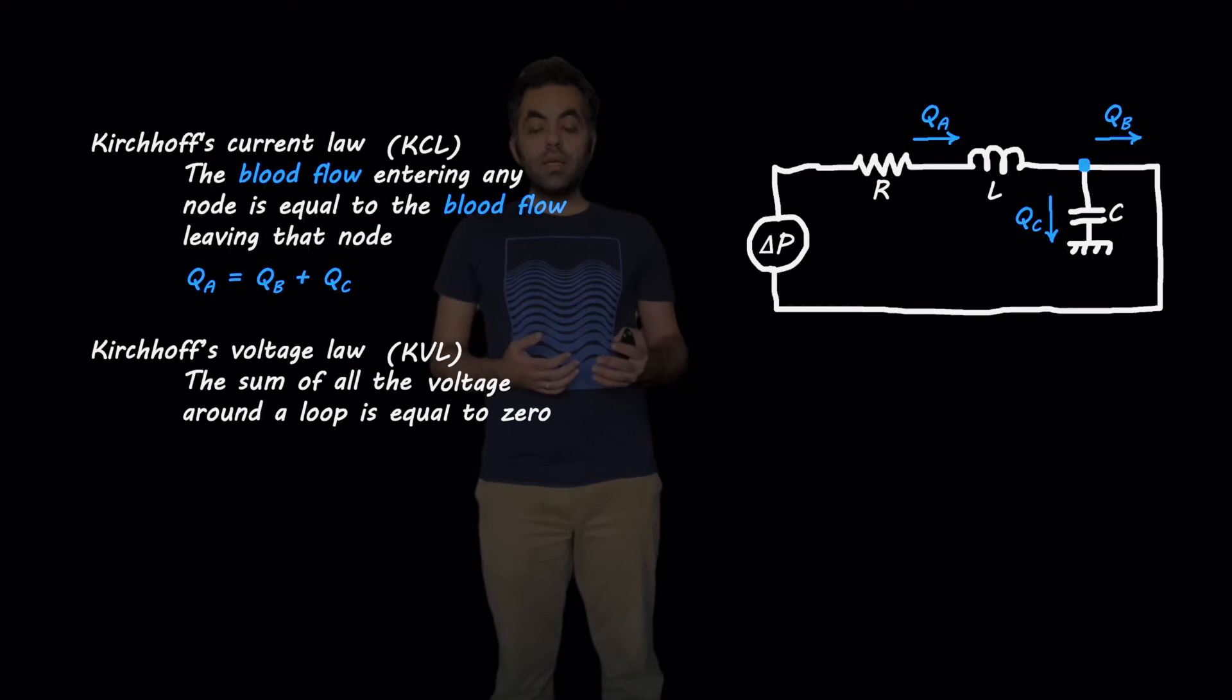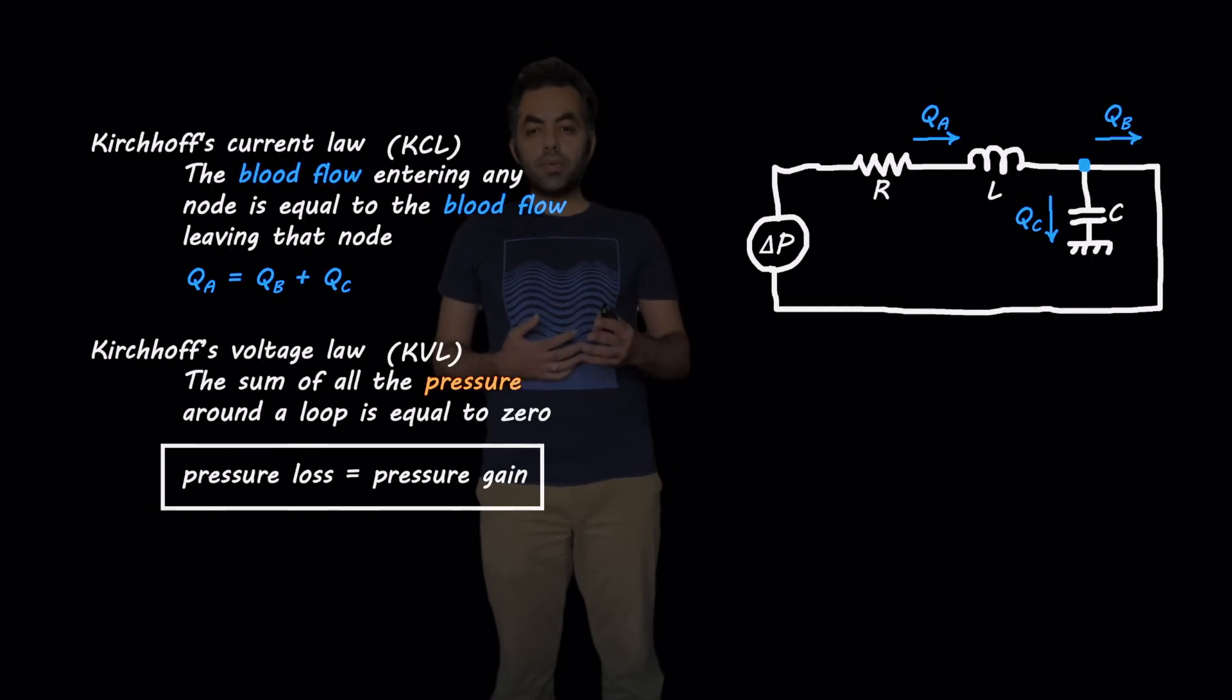Then, Kirchhoff's voltage law says that the sum of all voltage around a loop is equal to zero. Again, we know that voltage is a representative of blood pressure. So let's replace it by pressure. The pressure around a loop is zero. What does it say? It means that if there is any pressure loss due to some of the components, some of the elements in our circuit, then there should be a pressure gain as well to compensate for it.